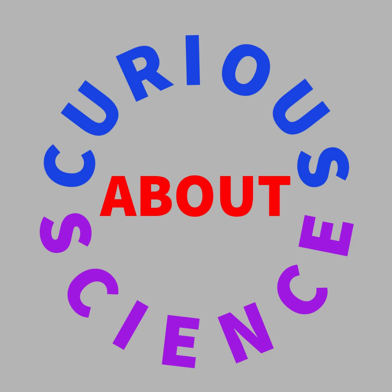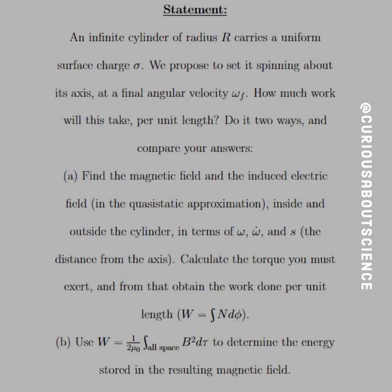All right, here we go. Last question with this energy section. We have an infinite cylinder of radius R carrying a uniform surface charge sigma. We propose to set it spinning about its axis at a final angular velocity omega f. How much work will it take per unit length? This is going to be fun. Do it two ways and compare your answer.